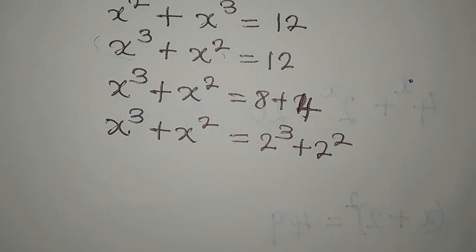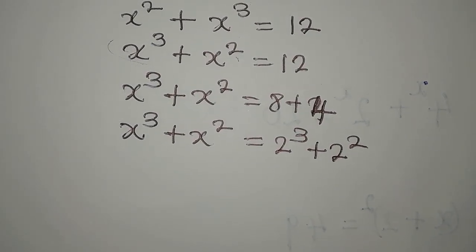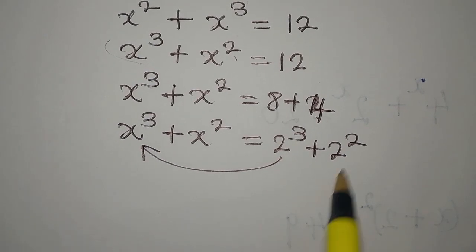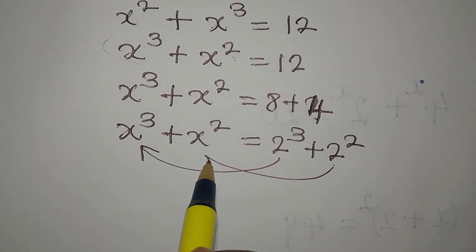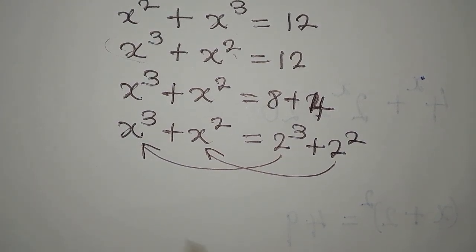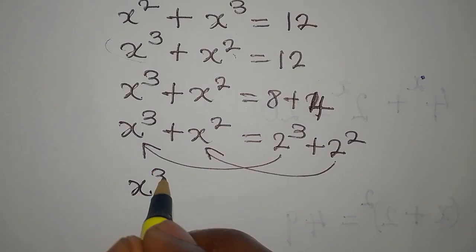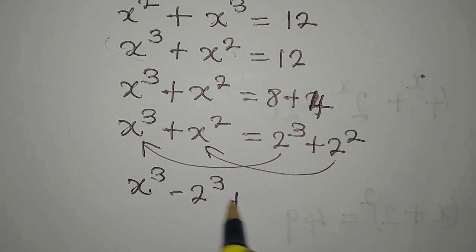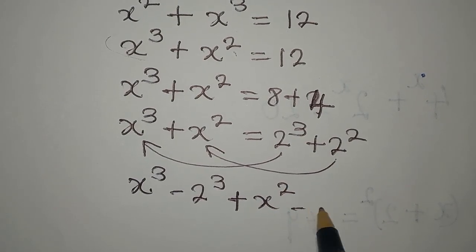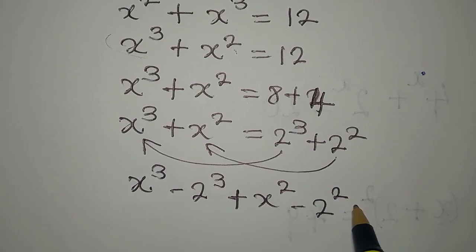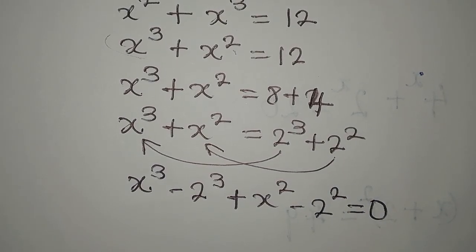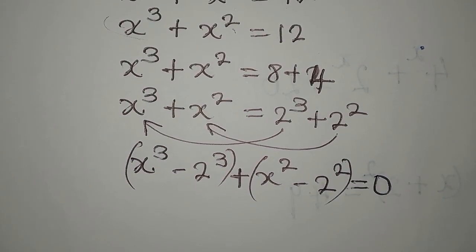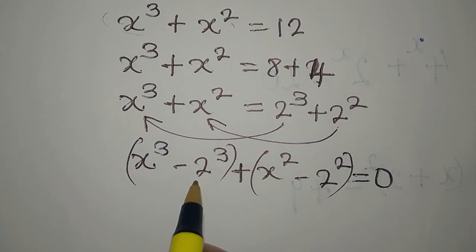Look at the left-hand side and the right-hand side — can you see any resemblance? We bring the matching terms together: x³ minus 2³, plus x² minus 2², all equal to zero. We've grouped them without changing the equation. The first group is a difference of two cubes, and the second is a difference of two squares.